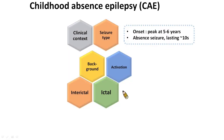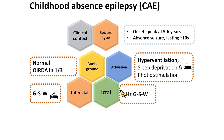Childhood absence epilepsy is a genetic generalized epilepsy that should be considered in an otherwise normal child with onset of frequent absence seizures, especially at 5 to 6 years of age. The background activity is normal. Occipital Intermittent Rhythmic Delta Activity may be seen in one-third of cases. EEG abnormality and absence seizures are provoked by hyperventilation. Regular 3 Hz generalized spike and wave is associated with absence seizures.